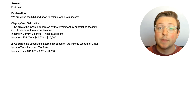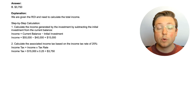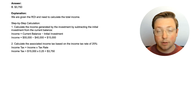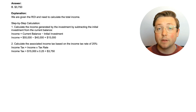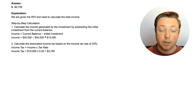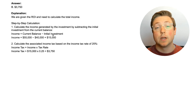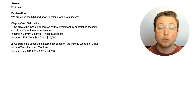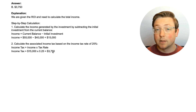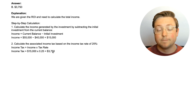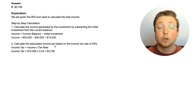The answer is $3,750. We are given the ROI and need to calculate the total income, so we can then calculate the income tax. First, we calculate the income: take the current balance, subtract the investment that was put in, and that gives you the income. Then you take that income and multiply it by the income tax rate, and that tells you how much income tax will be owed on the earnings from this investment. Pretty straightforward.